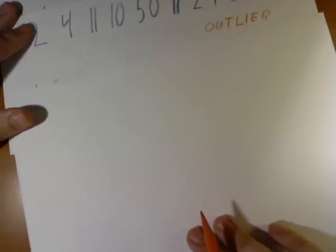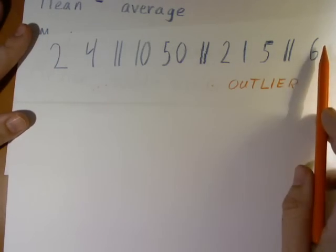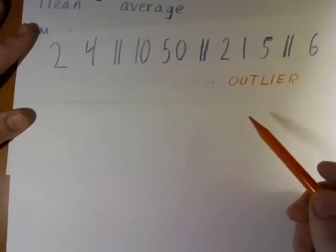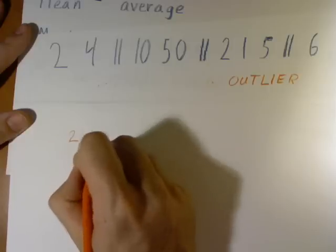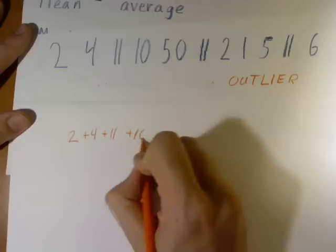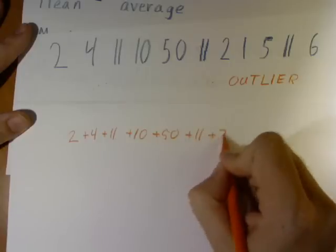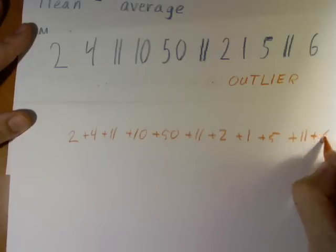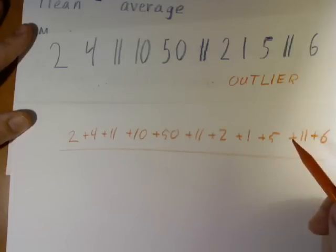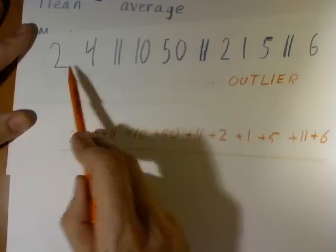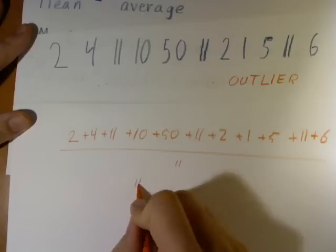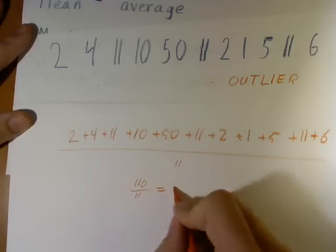In order to find the average, we need to take our numbers, add them all up, and divide by the number of numbers that we have. So in this case, we'll take 2 plus 4 plus 11 plus 10 plus 50 plus 11 plus 2 plus 1 plus 5 plus 11 plus 6, and divide that by how many numbers we have — we have 11 numbers here, so we divide by 11. In this case, we get 110 divided by 11, which gives us 10.